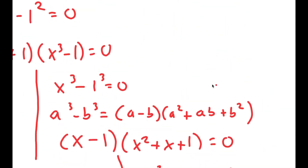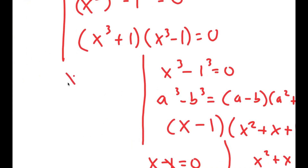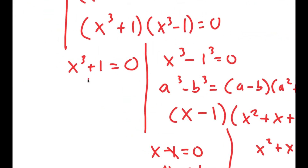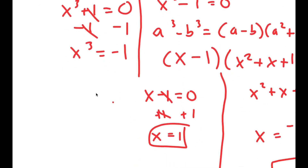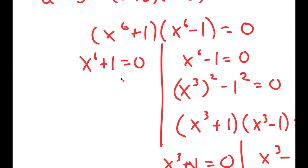We aren't done yet because we also have to solve the remaining equations. For x to the power of 3 plus 1 equals 0, I subtract 1 on both sides to get x to the power of 3 equals negative 1, meaning x is also equal to negative 1. So this is another solution.